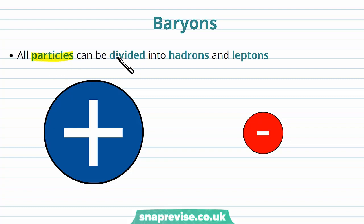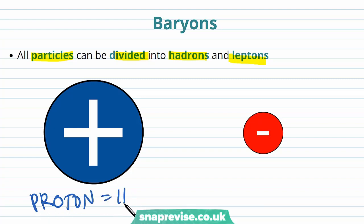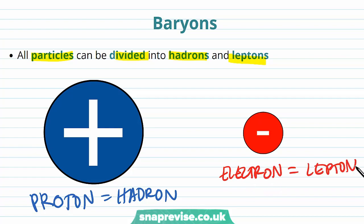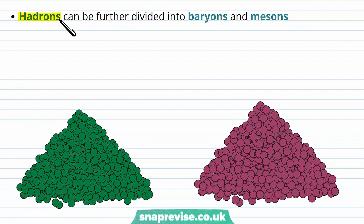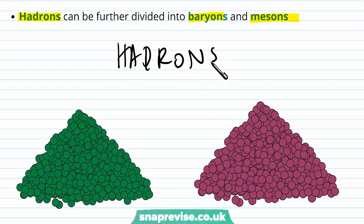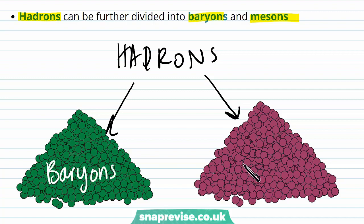All particles can be divided into hadrons and leptons. We've seen previously that the two main groups of particles are hadrons and leptons. A proton is a type of hadron, and an electron is an example of a lepton. However, hadrons can be further divided into two other groups called baryons and mesons.